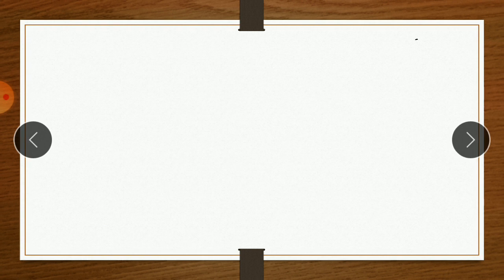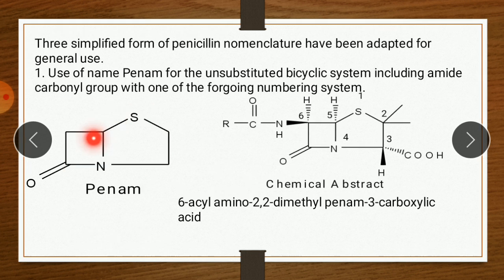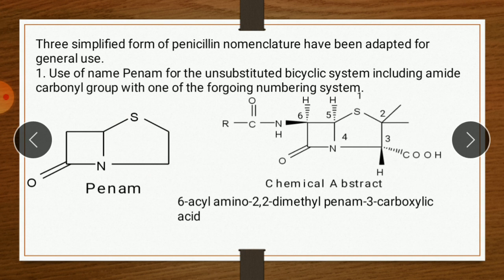Apart from these two systems, three simplified forms of penicillin nomenclature have been adopted for general use. The first uses the name 'penem' for the unsubstituted bicyclic system including the amide carbonyl group. Penem refers to the basic structure containing only the beta-lactam ring, thiazolidine ring, and the carbonyl group — without carboxylic group, side chain, or dimethyl group.